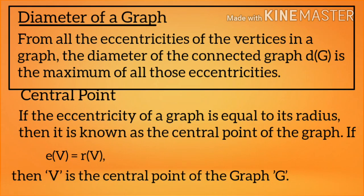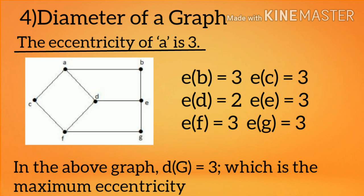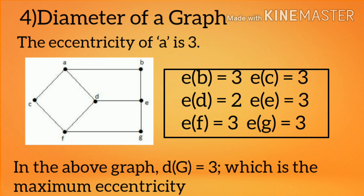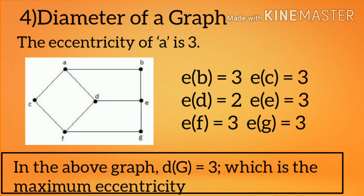Diameter of a graph: from all the eccentricities of the vertices in a graph, the diameter D(G) is the maximum of all those eccentricities. Eccentricities: E(A) = 3, E(B) = 3, E(C) = 3, E(D) = 2, E(E) = 3, E(F) = 3, E(G) = 3. In the above graph, D(G) = 3, which is the maximum eccentricity.